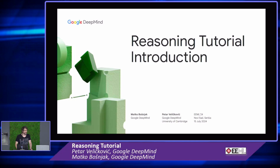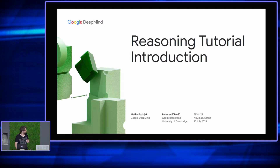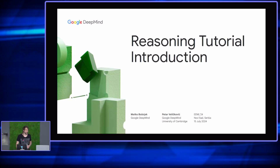Hi everyone. My name is Matko. I'm a research scientist at Google DeepMind. I'm originally from Croatia where I finished my undergrad, and then after a series of things I decided to pursue my PhD career outside of the country.